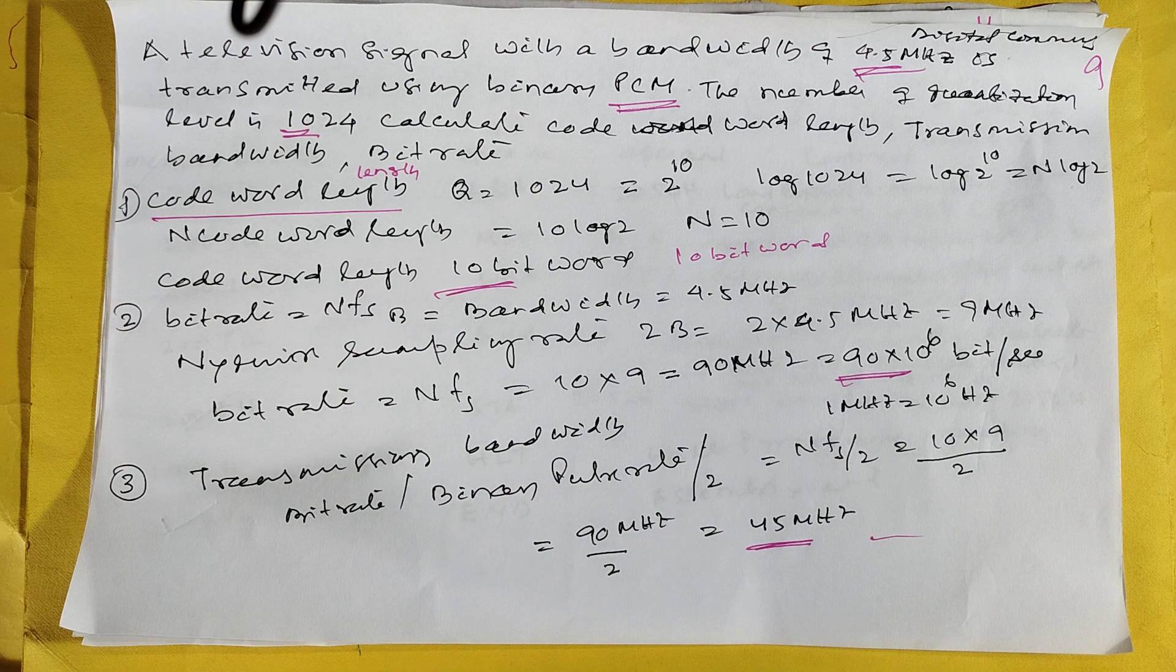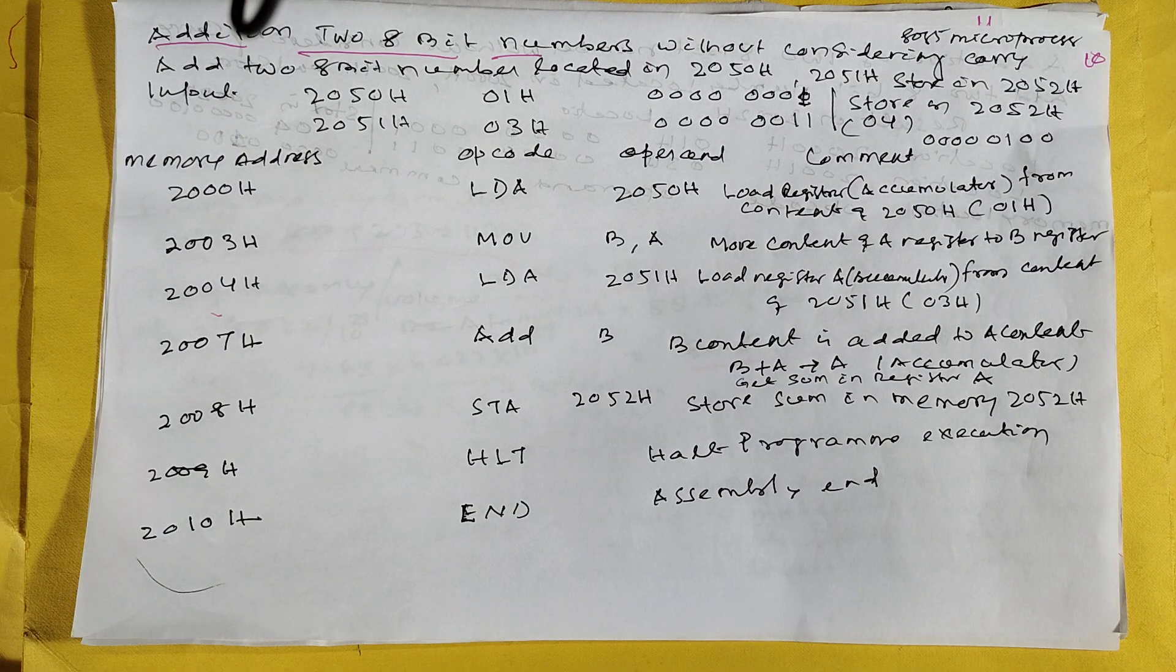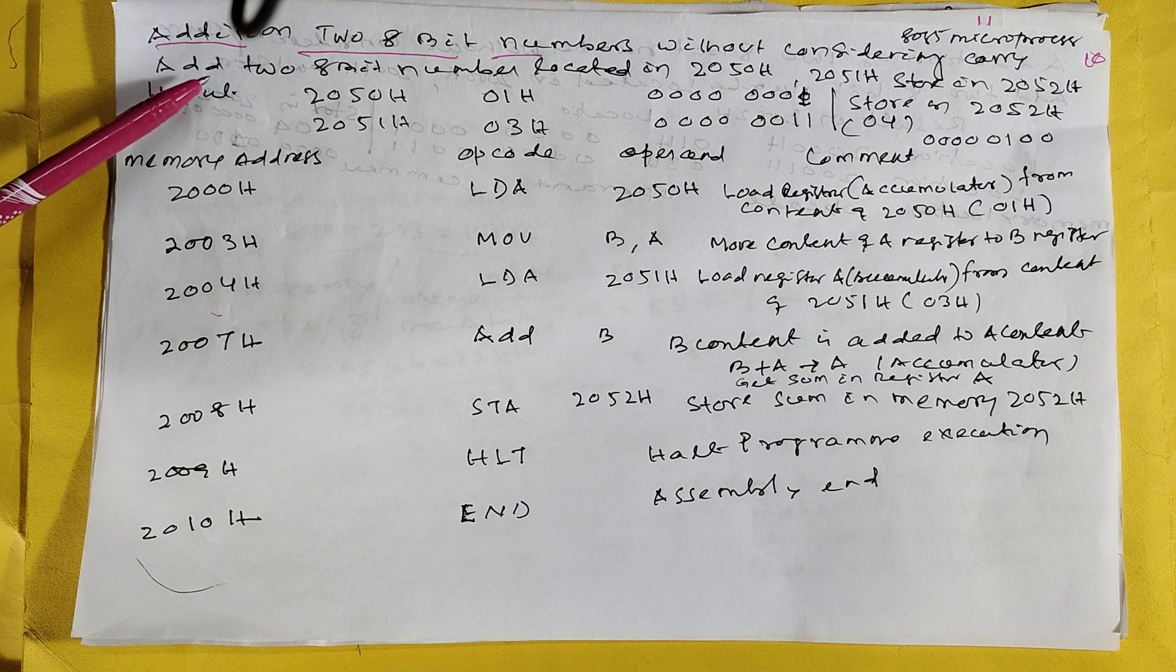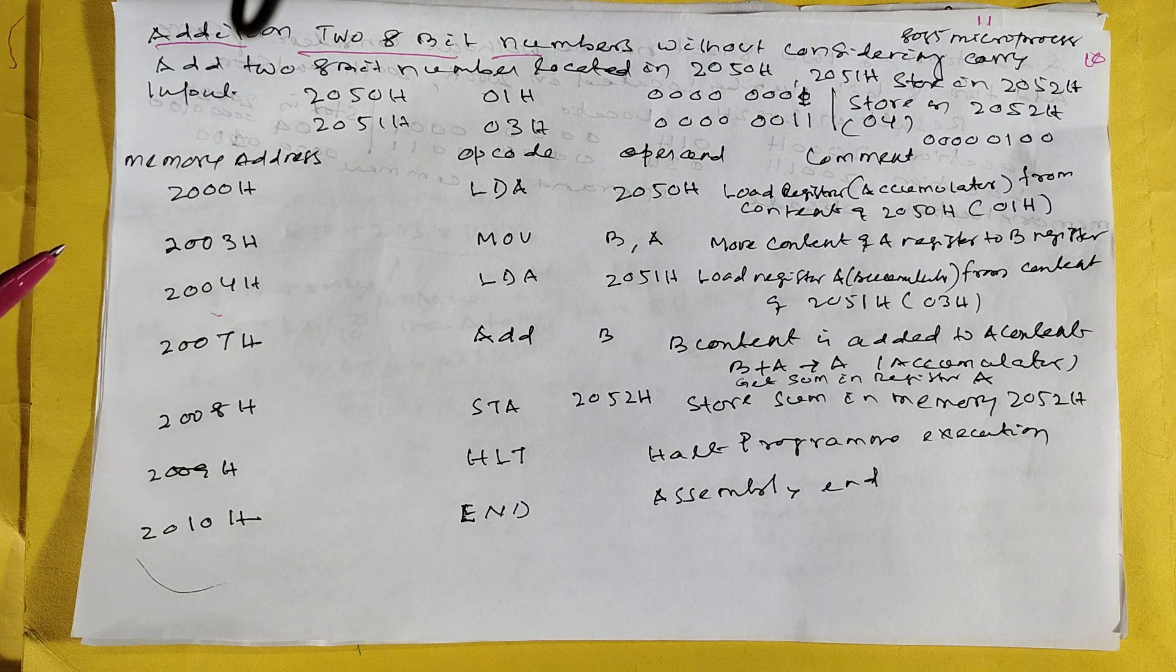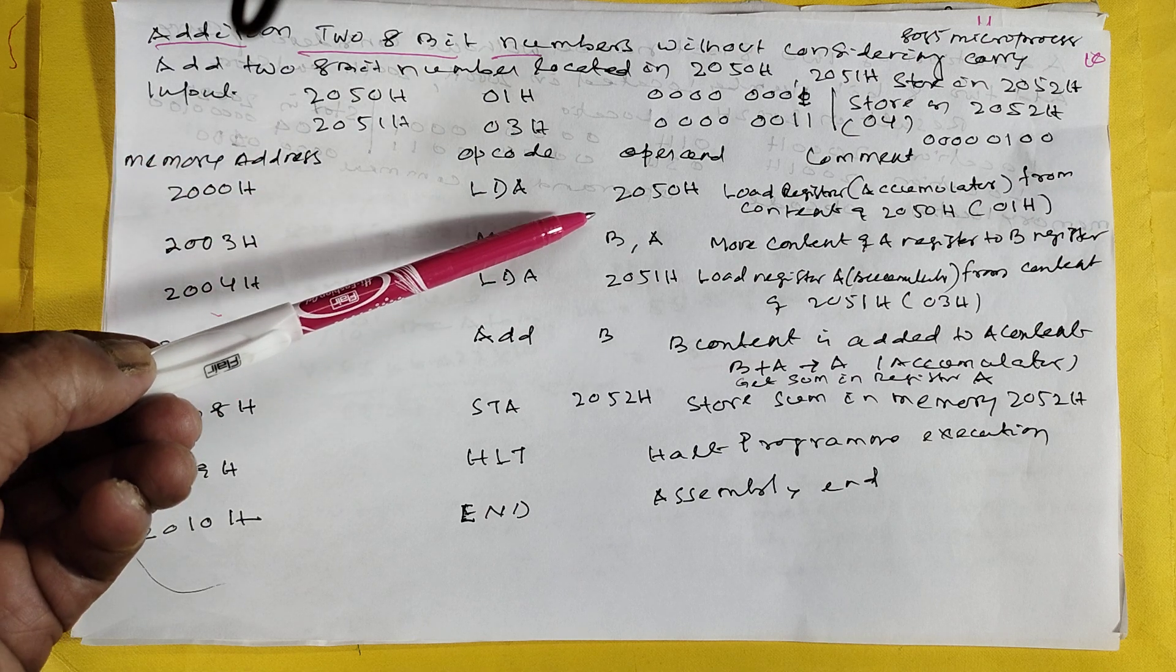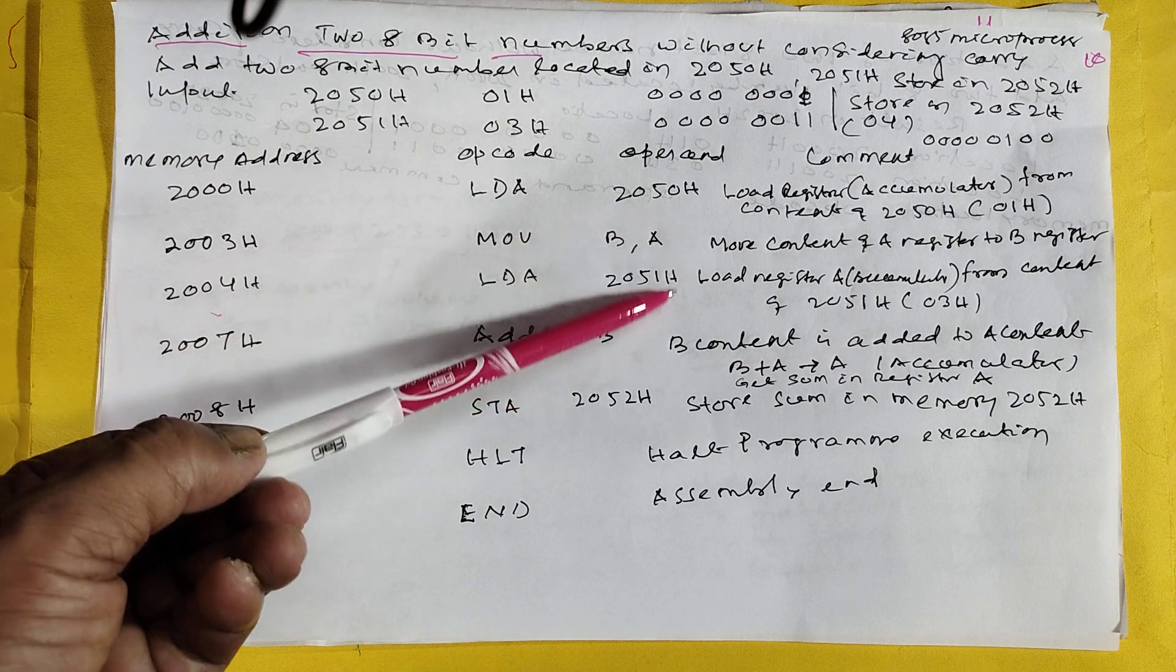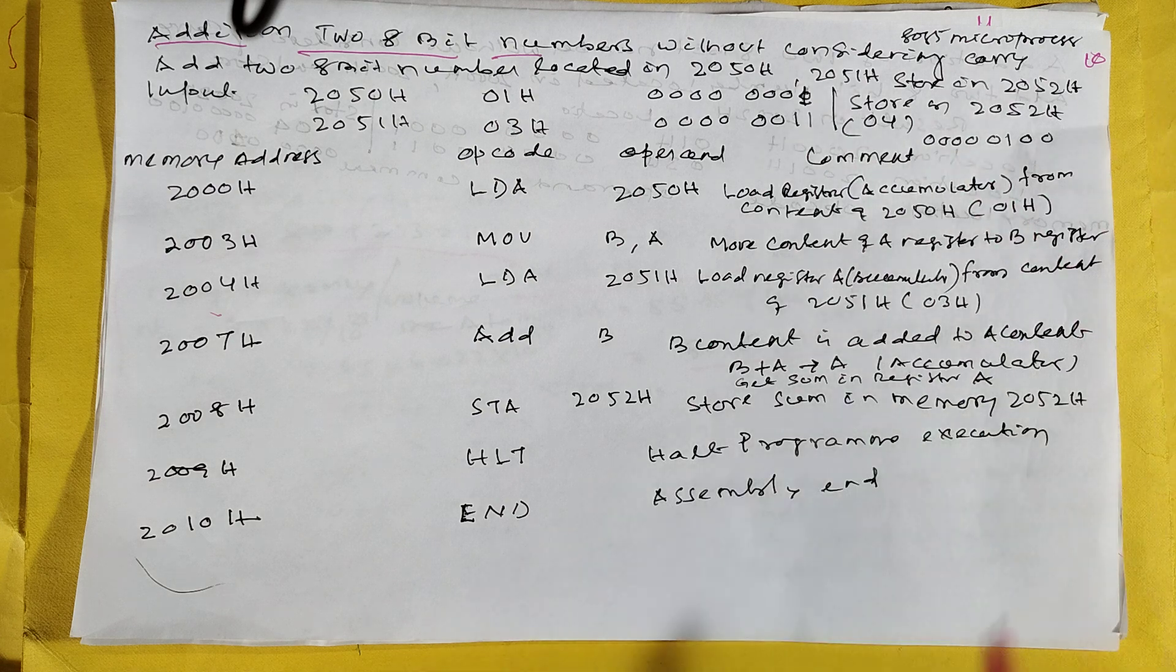This is the addition of two 8-bit numbers. Here everything is mentioned. Just telling two 8-bit numbers stored at memory location 2050H and 2051H. Numbers are 01H and 03H. First you load one number. Once you load it, coming to accumulator, then transfer to another register. Load another number 2051, then add B. B means automatic. This number is there, so it is already calculated. It is not saying, but it will come. 04 will come.